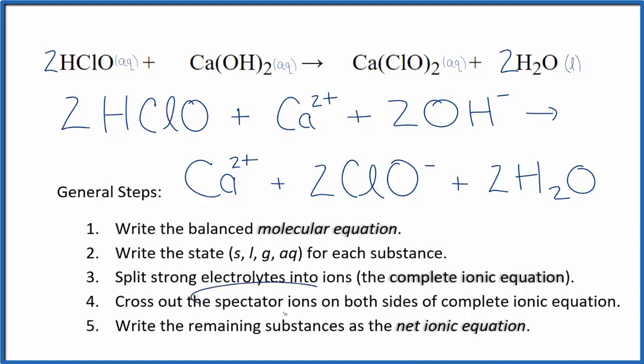Now we can cross out the spectator ions. They're on both sides. The only thing that's the same on both sides, here in the reactants we have the calcium ion, and again in the products. So we can cross that out, and what's left is the net ionic equation for HClO plus Ca(OH)₂.